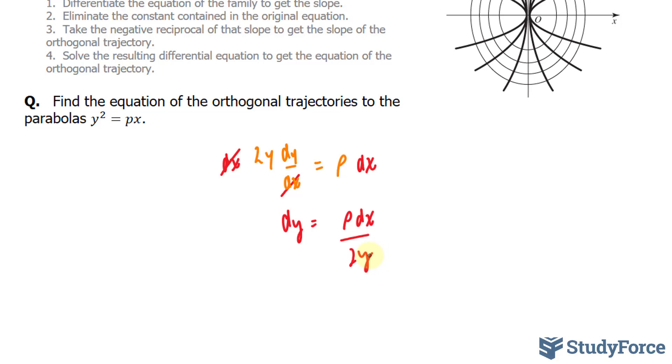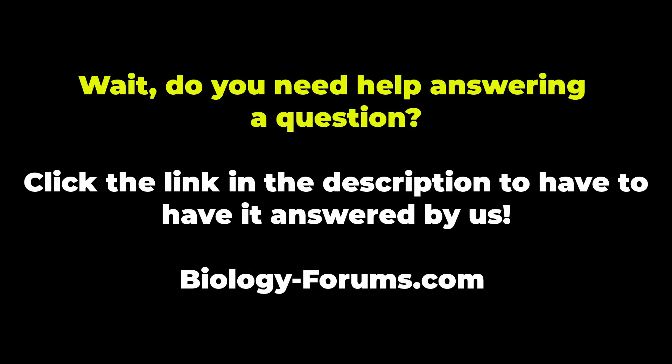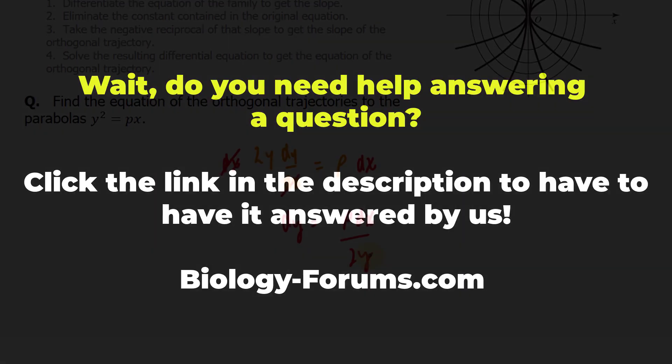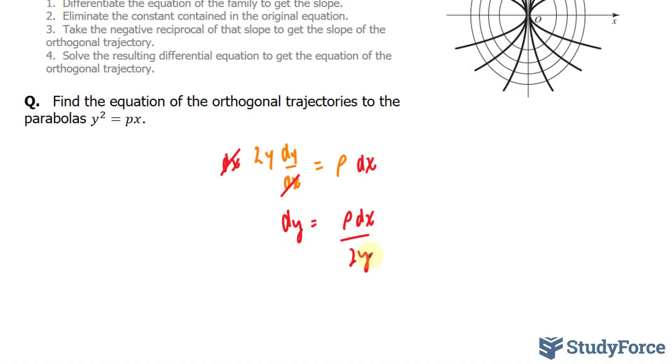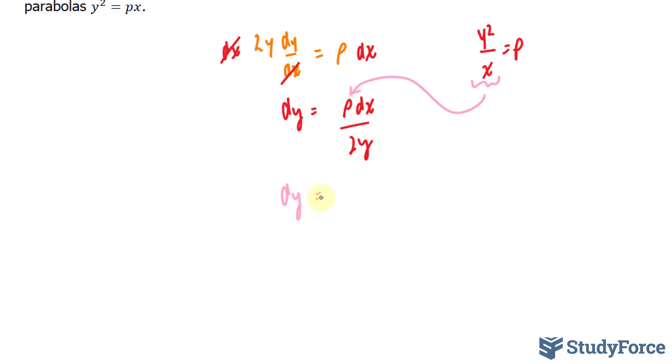Moving on to step two, they ask us to eliminate the constant contained in the original equation. The constant p from the original equation is y²/x. And you can find that easily by dividing both sides here by x, and you end up with p. Substituting y²/x for p, we end up with the following. So let me show you my steps. I have y²/x = p, and I'll substitute this into here.